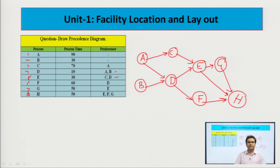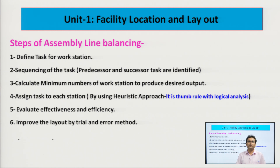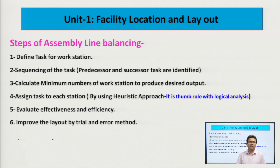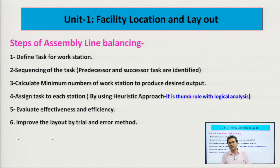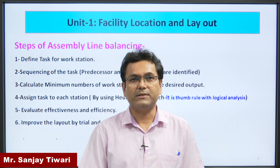The steps of assembly line balancing are: first, define tasks for each workstation; second, sequence the tasks and identify predecessor and successor tasks; third, calculate the minimum number of workstations to produce the desired output; fourth, assign tasks to each station using a heuristic approach; fifth, evaluate effectiveness and efficiency; and sixth, improve the layout by trial and error method since there is no unique solution — multiple solutions exist and the best must be found. That concludes today's lecture. Thank you.